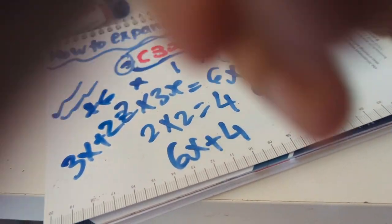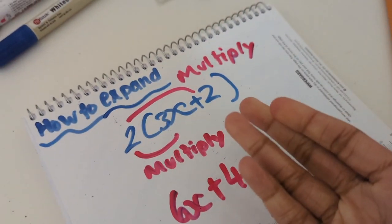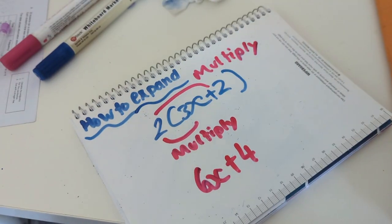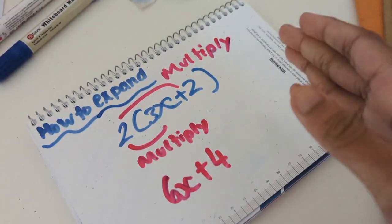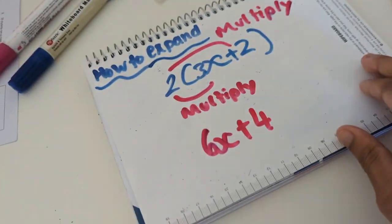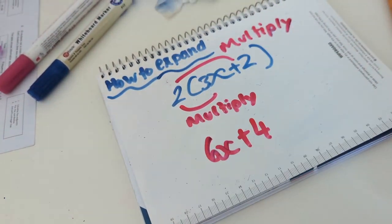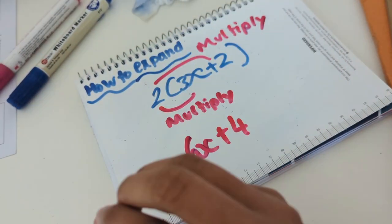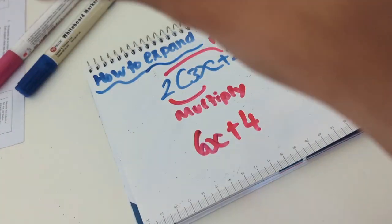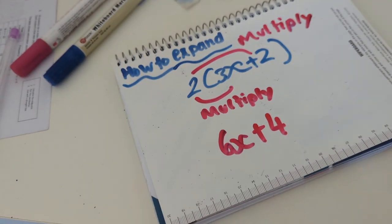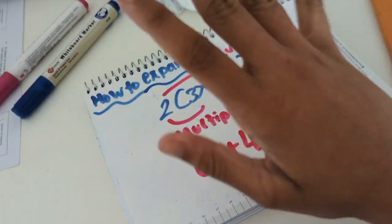That's how you expand and factorize. I hope this helps. I might do a more professional one covering every concept of expanding, factorizing, and simplifying. This is part two of how to expand and simplify, where I've included factorizing and expanding. In part three I'll include simplifying, expanding, and factorizing. See you guys next week, bye!